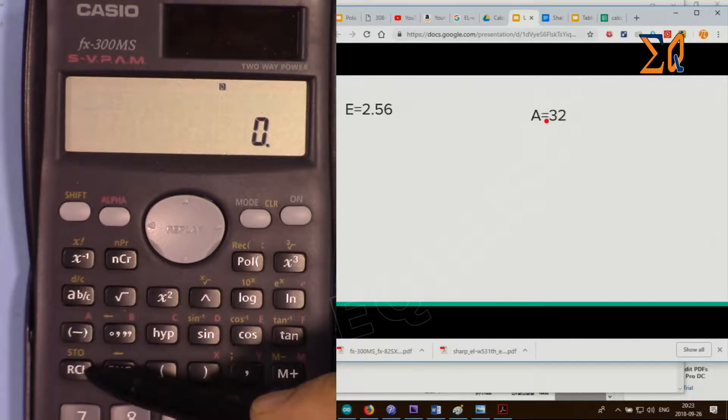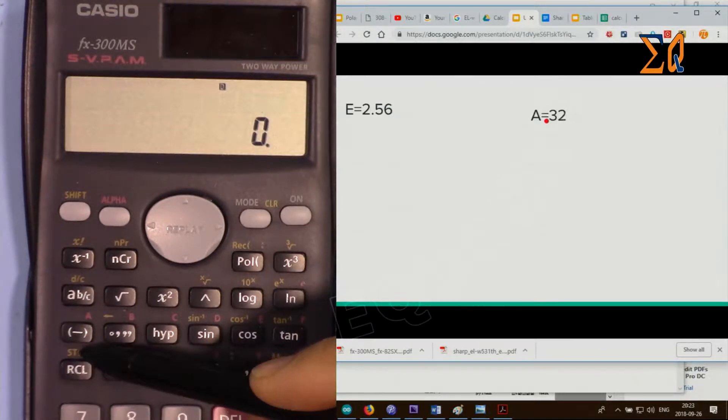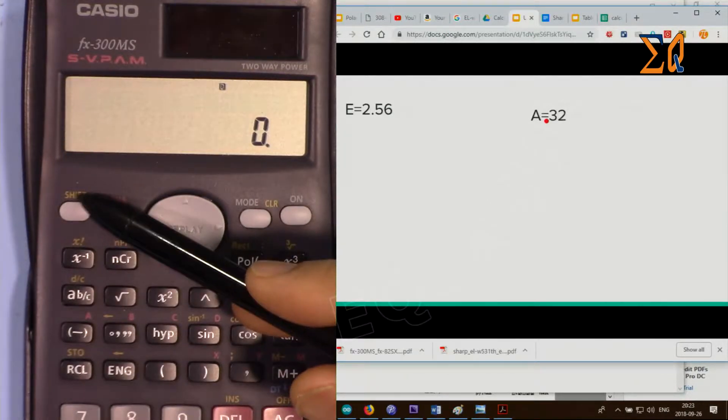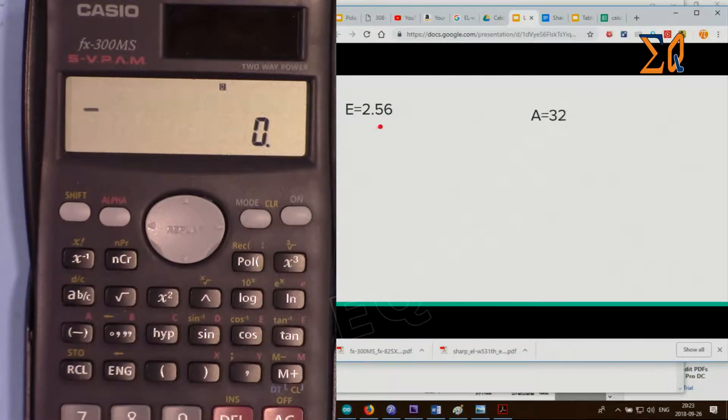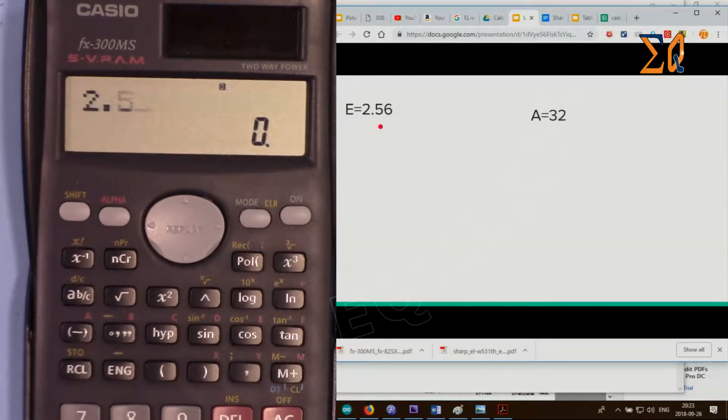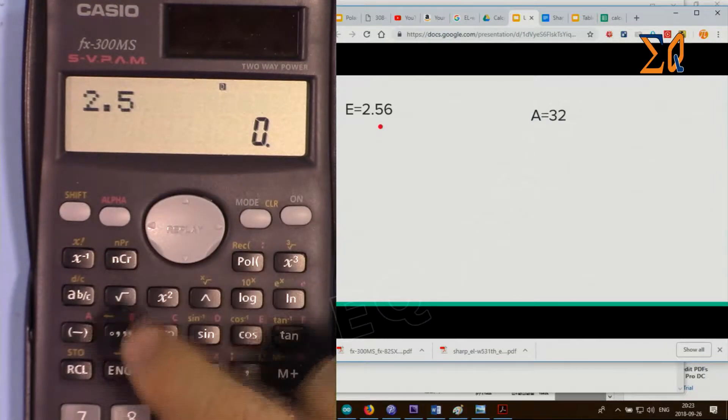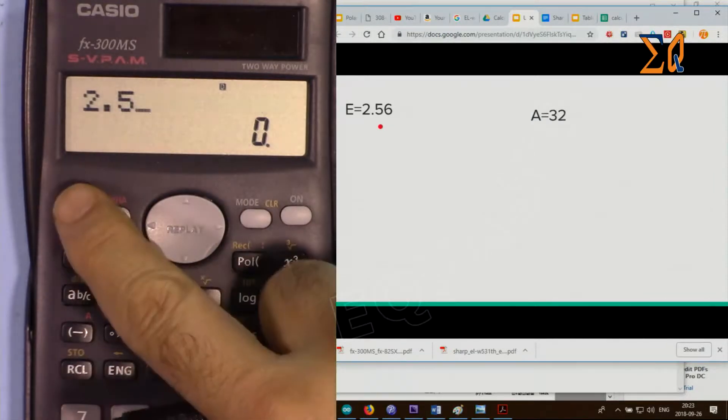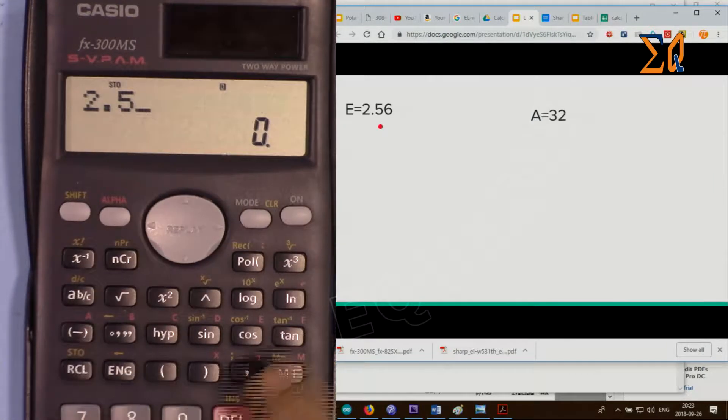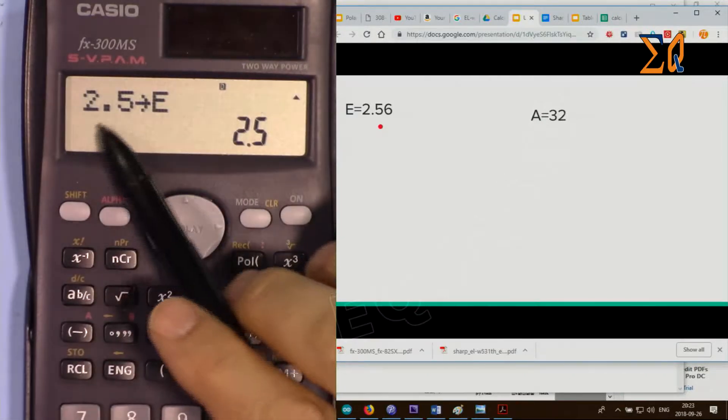Let's store 2.5 into E. Enter 2.5, and then store is a second function, so press shift and then E. Now you'll see the value is stored in E.